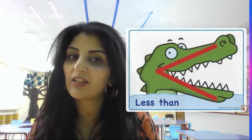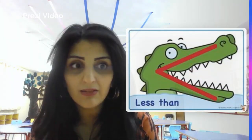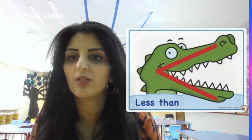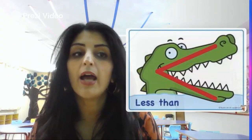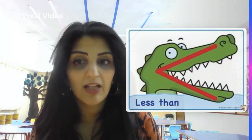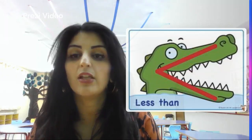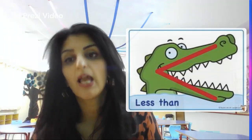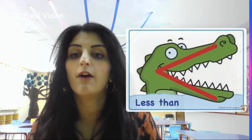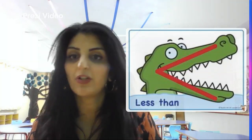The alligator sign only eats the big numbers. Always remember, when I talk about comparison, I am talking about the less than, the greater than, and then the equal sign. When I say equal, I am saying the two numbers next to each other have the same value. So if I have the number 10 and I have the number 10, I will have the comparison sign of equal.